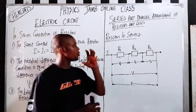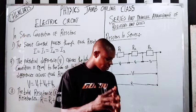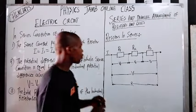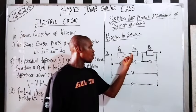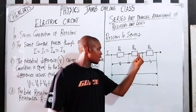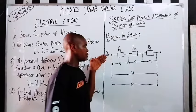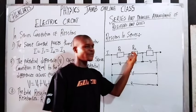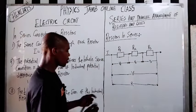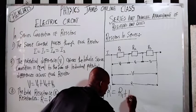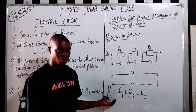Let's look at resistors in series. Resistors are connected in series when the positive end of one resistor is connected to the negative end of the next resistor, and so on. Just like this — the positive end of one connected to the negative end of the next. The equivalent resistance R equals R1 plus R2 plus R3. When resistors are connected in series, the equivalent resistance is the sum of all individual resistances.